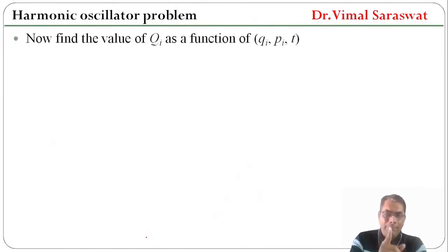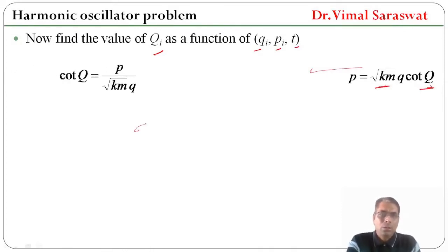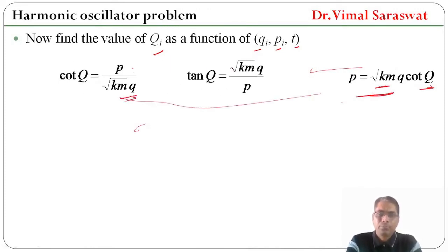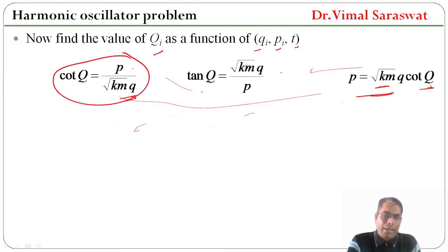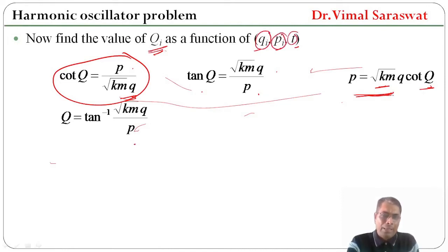Now we find the value of Q as a function of the old coordinate q, old momentum p, and time t. Since p = √(km) · q · cot(Q), we get cot(Q) = p / (√(km) · q). Taking the reciprocal, tan(Q) = √(km) · q / p, and therefore Q = tan⁻¹(√(km) · q / p).